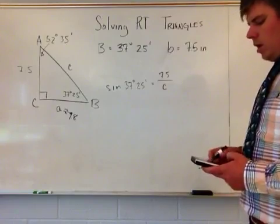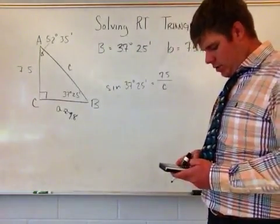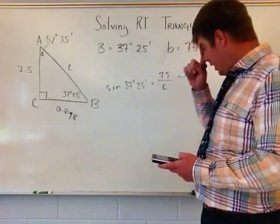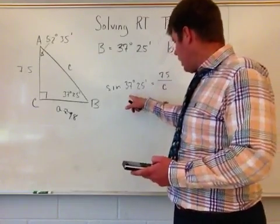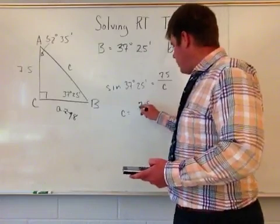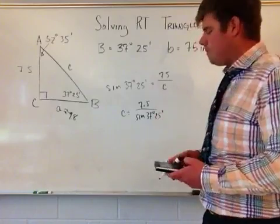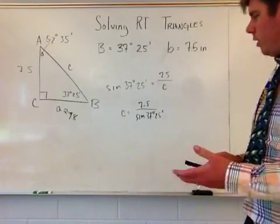So now if I want to, this particular one, it's solved the same exact way. So for me to do this, all I'm going to do is type in here that C is going to be equivalent to 7.5 divided by the sine of 37 degrees, 25 minutes. So now I want to go ahead and plug this in.